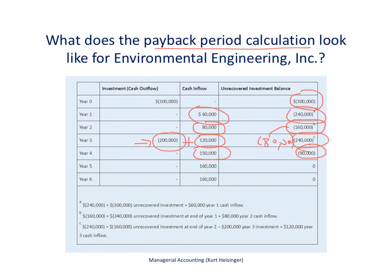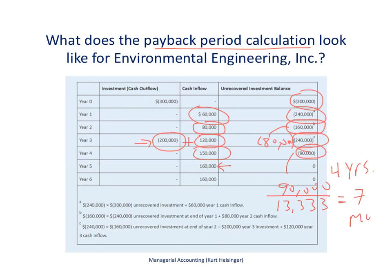To find exactly what the payback period is: it's going to be four years and a few months. One way to calculate the months is to take the $160,000 year-five cash flow and assume it is received evenly throughout the year, giving $13,333 per month ($160,000 divided by 12). We need to recover $90,000, so $90,000 divided by $13,333 rounds to seven months. Therefore the payback period is four years and seven months to recover both the initial investment of $300,000 and the $200,000 remodel investment in year three.